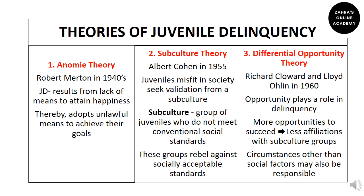To summarize: according to differential opportunity theory, if juveniles have more opportunities they will be more willing to succeed than to join a subculture. These are the three major theories of juvenile delinquency; other theories will be discussed in the next slides.